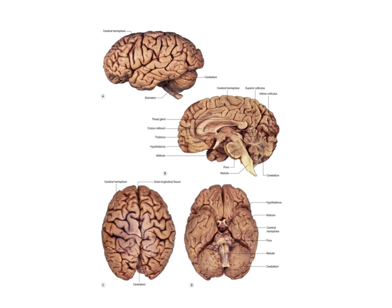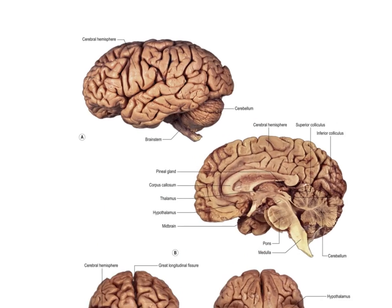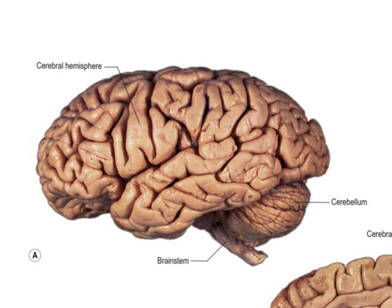In this mini-tutorial, we're going to look at some of the superficial features of the brain, mainly the cerebral hemispheres. We've got a lateral view of the cerebral hemisphere here - this is the left cerebral hemisphere. We're going to look at a superior view, an inferior view, and a sagittal section. So let's start off by taking a look at this lateral view of the left cerebral hemisphere.